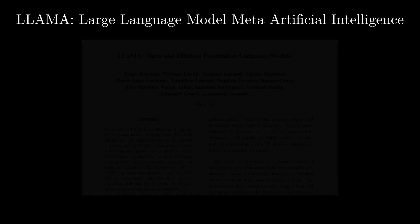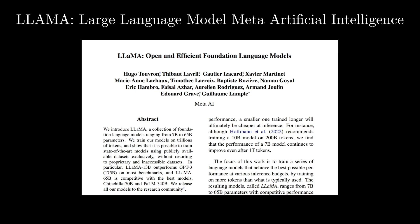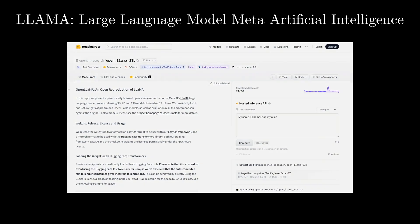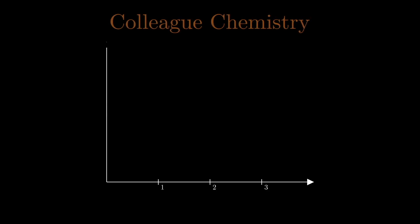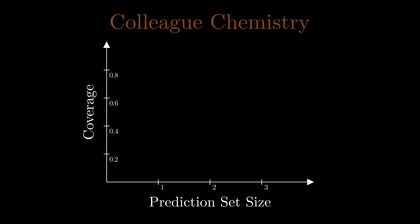Let's use the large language model LLaMA by Meta for this task. If you are interested in reproducing the results, you can access the Hugging Face open-source version called OpenLLaMA, which, unlike the original version by Meta, requires no fulfilling of approvals. Beginning with the topic of college chemistry, which the paper shows is one of the most challenging for the model, performance is quite poor — with top-one, top-two, and top-three coverages hovering around 25%, 50%, and 75% respectively. This means the model's performance is similar to randomly selecting one, two, or three choices out of the four available options.